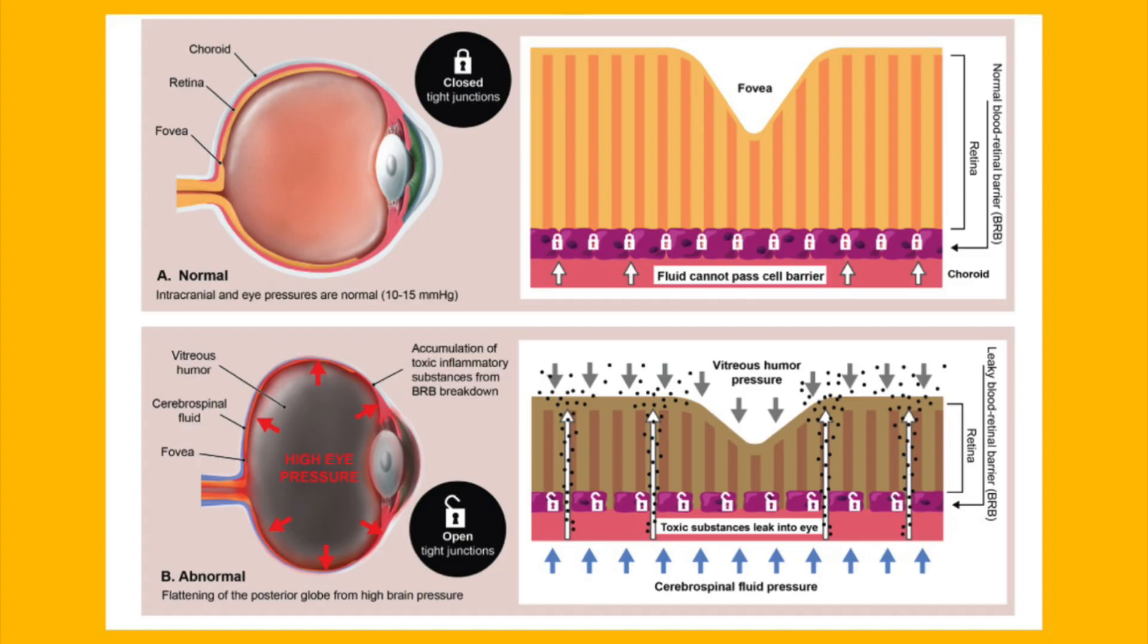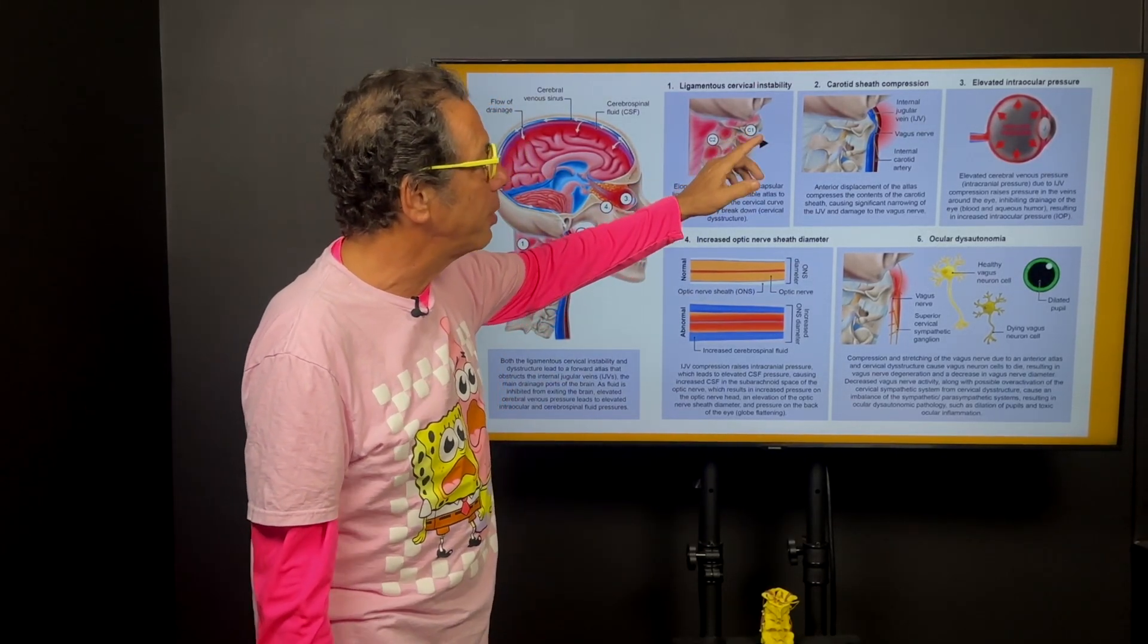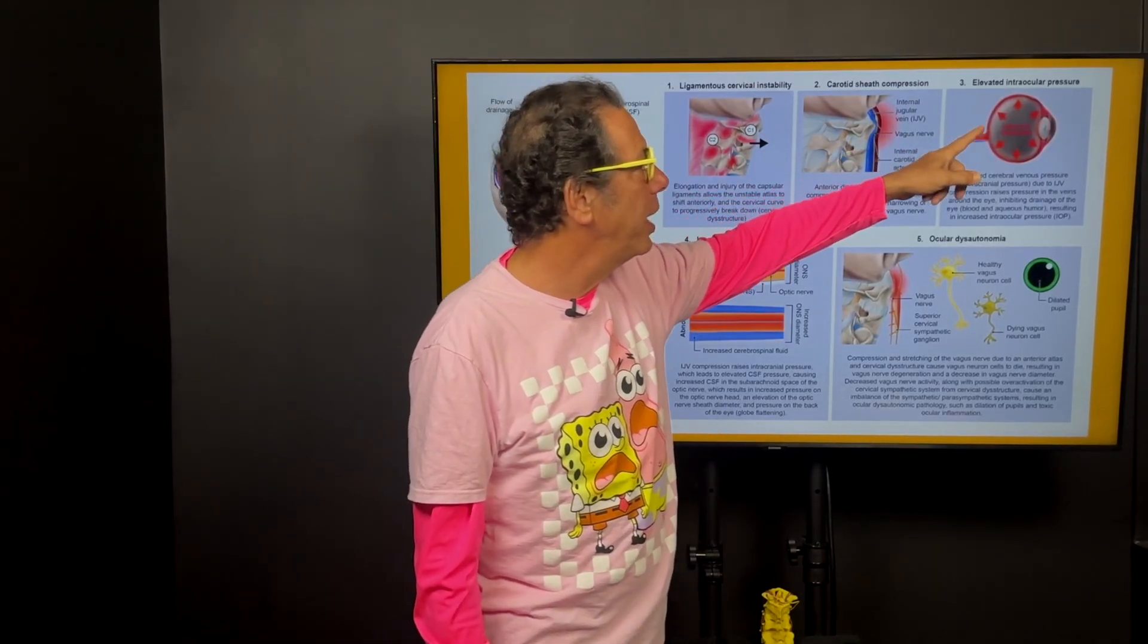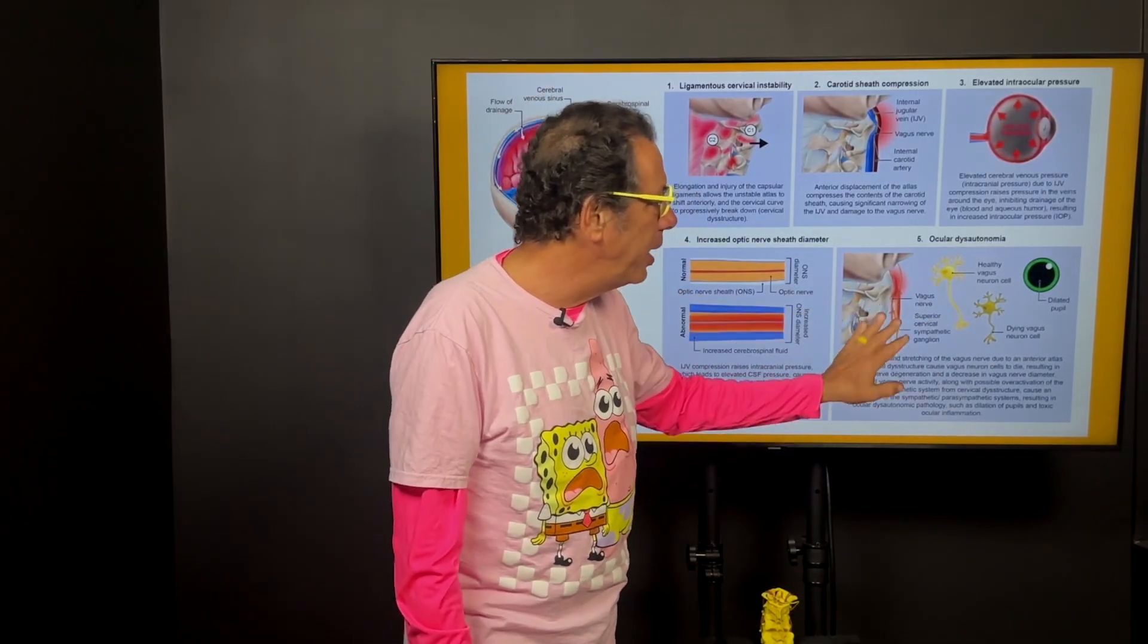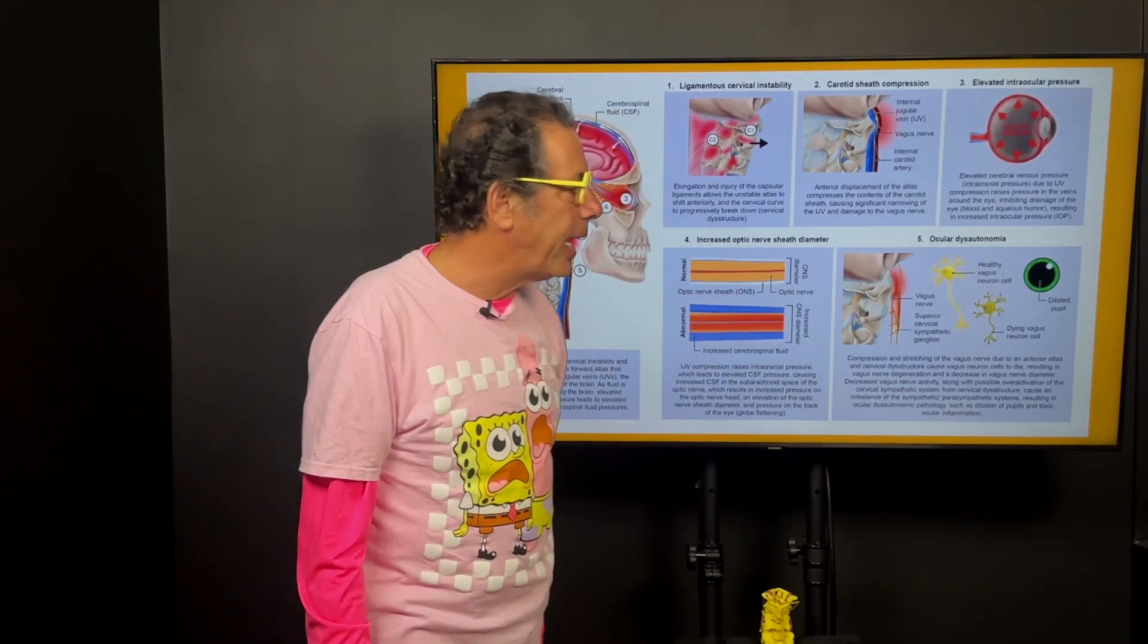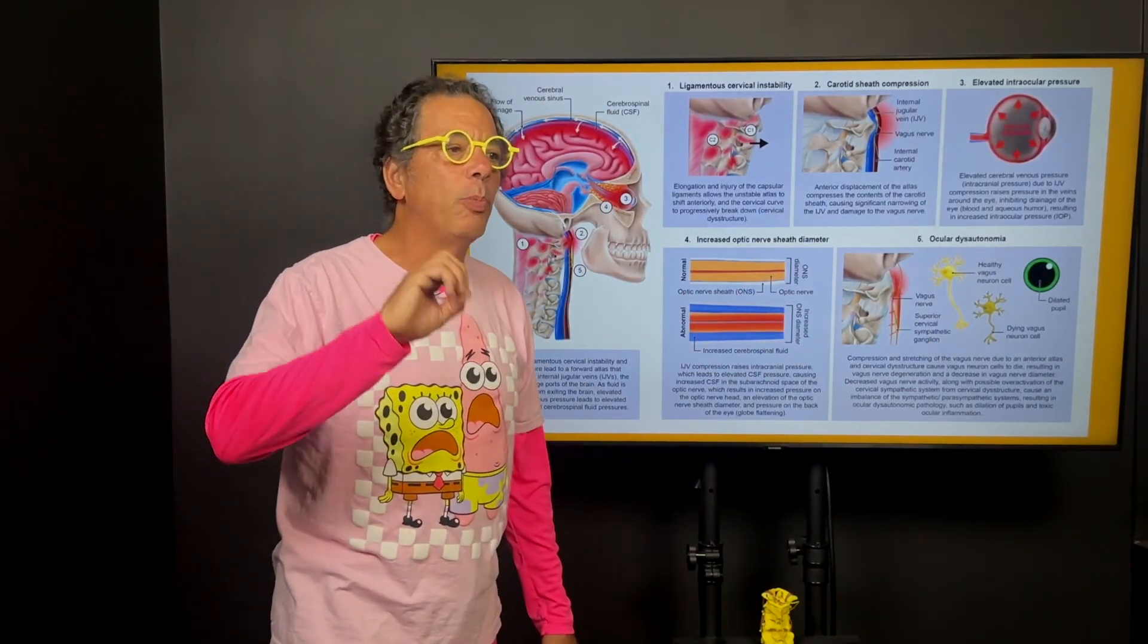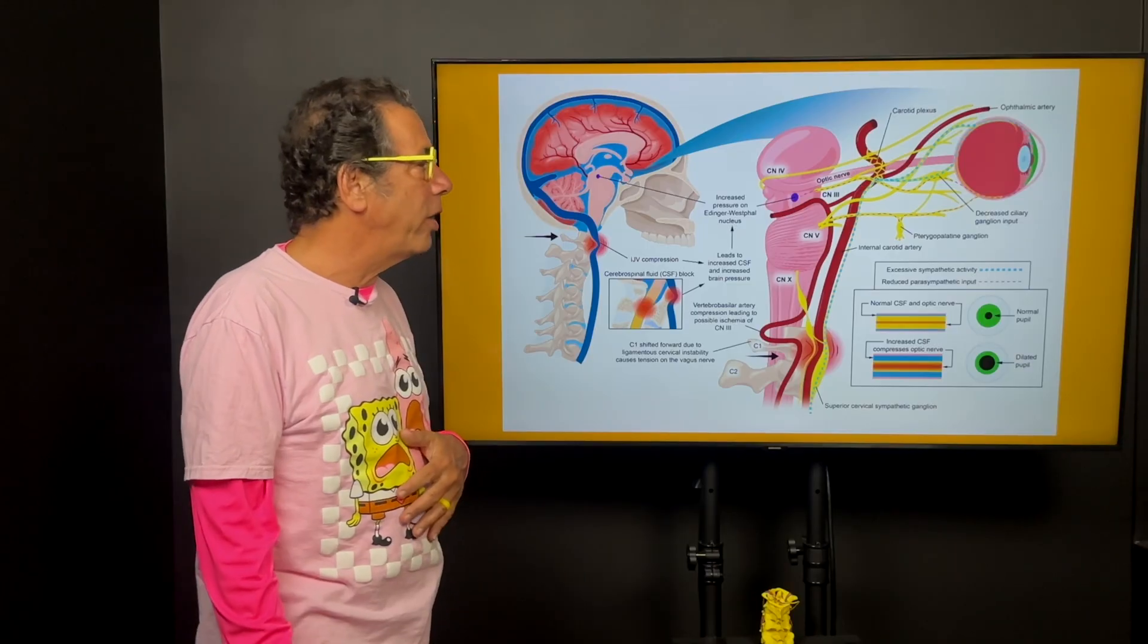All these things are a sign that there's the accumulation of toxic inflammatory substances in the eye. And then this explains that it starts out with a person looking down at a cell phone. They get ligamentous cervical instability. Eventually the carotid sheath gets compressed. This elevates the eye pressure. Fluid accumulates around the eye nerve and eventually the nervous system to the eye gets screwed up and then the pupils dilate excessively. When the pupils dilate excessively it changes the fluid flow out of the eye so the eye has even a harder time of getting rid of the toxic metabolic inflammatory substances and you get what we termed ocular dysautonomia.